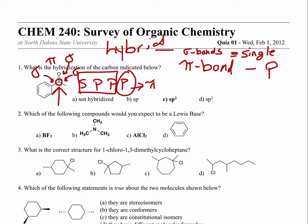Does everyone understand that and how to look at the structure — figure out what kind of bonds there are and what you had to originally make it up? In this case the answer was sp2. How about for this other carbon? Don't forget the hydrogens which are not drawn. There's a single bond and a single bond to a hydrogen — three sigmas and a pi. So it also has to be sp2 hybridization.